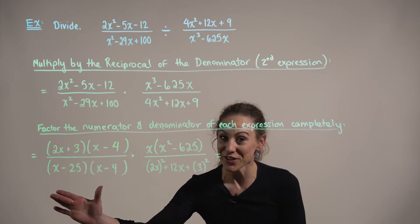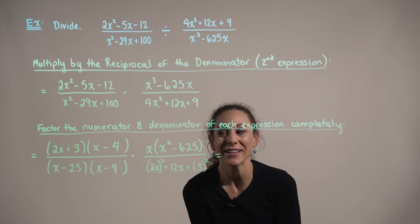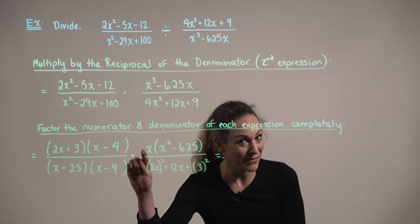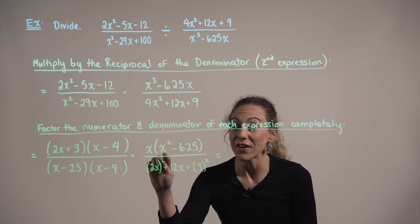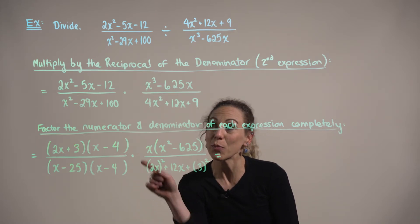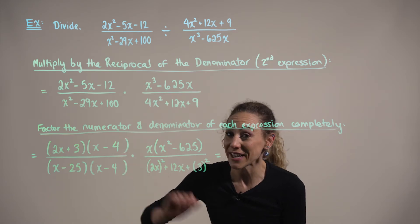So in our first initial factoring, we have factored the first rational expression completely. And then observe with our second rational expression, we factored out the greatest common factor of x in the numerator, and are left with the difference of squares. And in the denominator, we're working with a perfect square trinomial. So we can factor the second expression further.